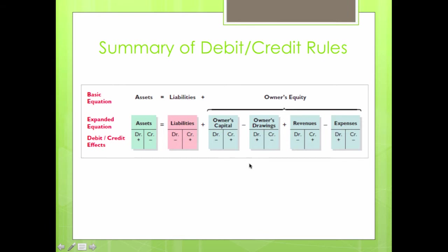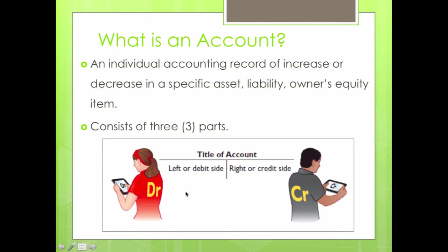I need you to erase the idea that debit means negative and credit means positive — erase that from your brain. Only remember that debit is the left side and credit is the right side of the account. That is it. Debit is left, credit is right. Also note that debit is abbreviated as DR and credit is abbreviated as CR.